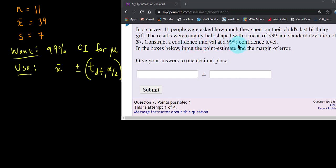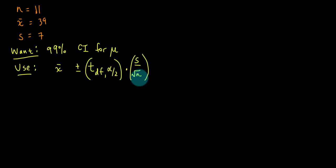We're going to create a 99% confidence interval for the average money spent on their child's last birthday. They want us to enter the point estimate and the margin of error. I transcribed all the required info over into my writing space and I've got the formula that we're going to utilize here.